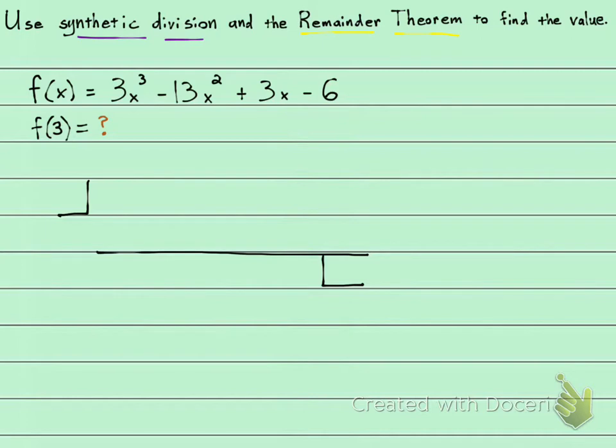So let's go ahead and set up our synthetic division. We're going to use our coefficients. So 3, negative 13, 3, and negative 6. And then the number over here is going to be 3.